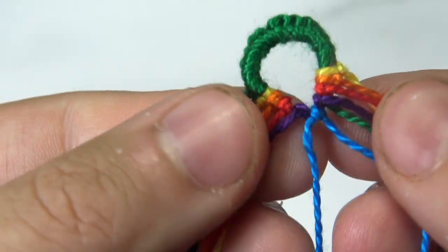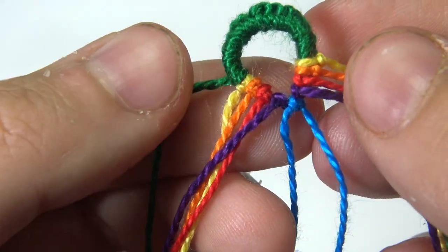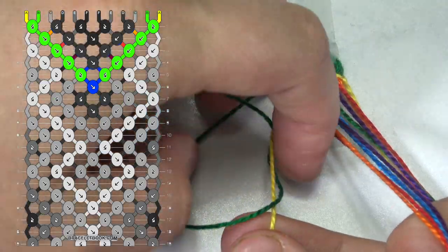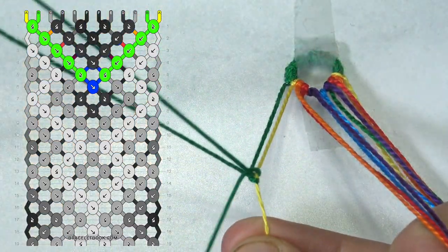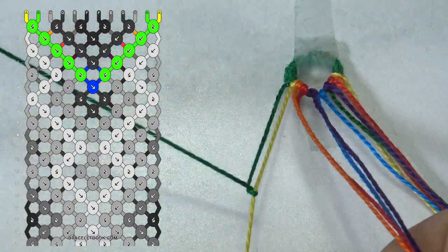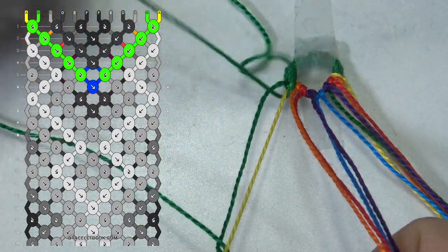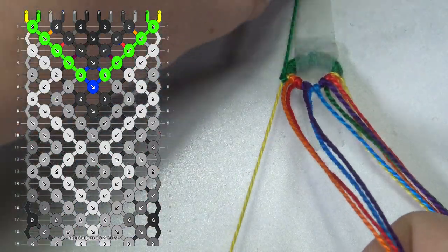Now we have all our strings exactly where we want it to start our pattern with the triangle so it's super easy now we can just go in order yellow orange red purple and blue. Let me show you how that looks like.